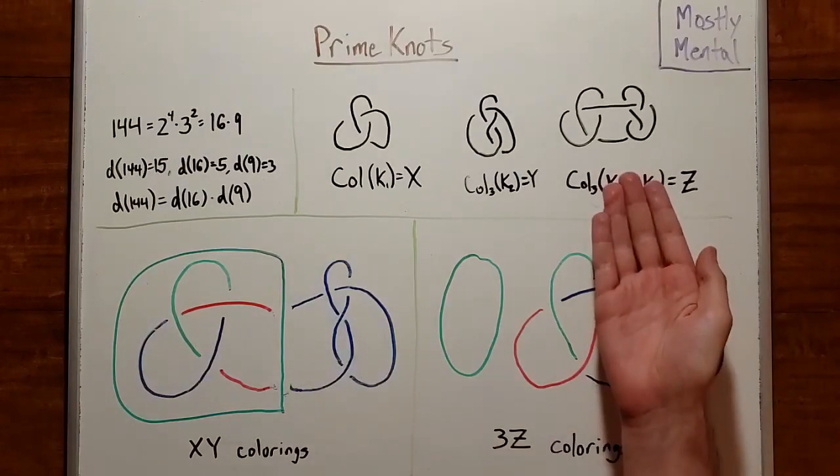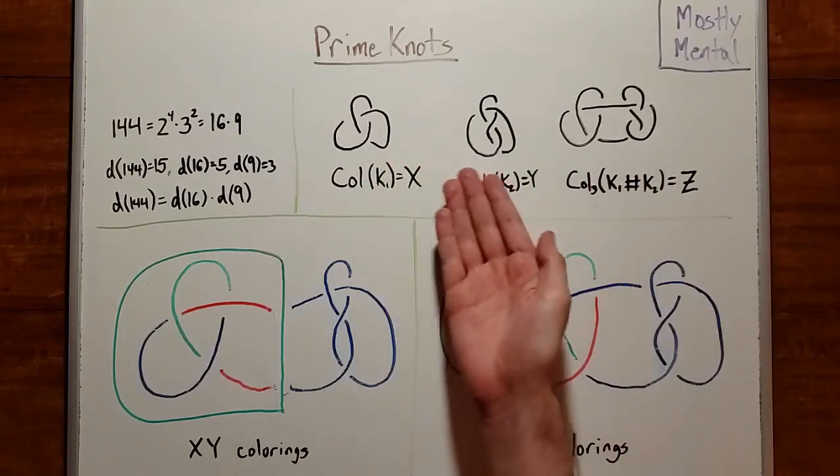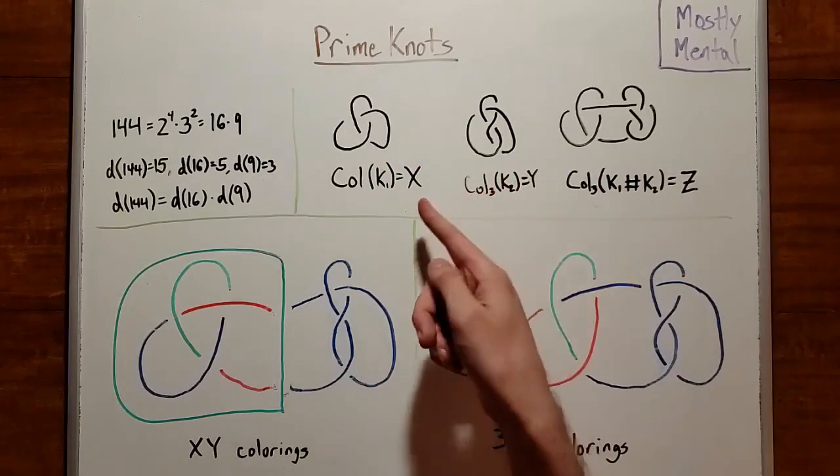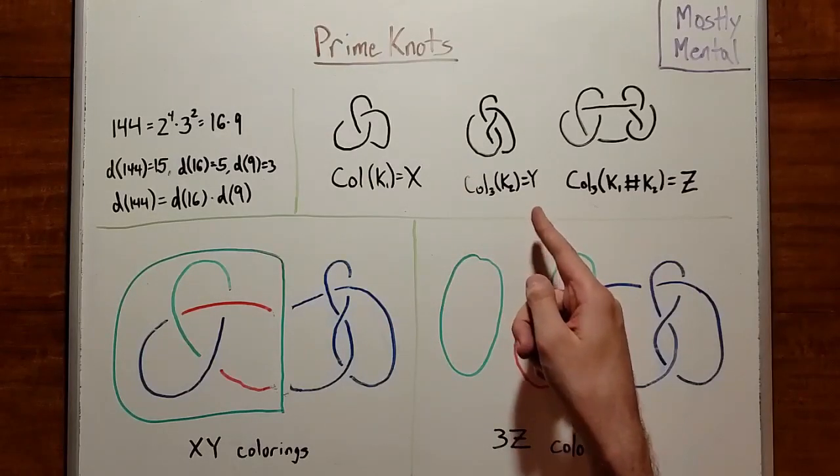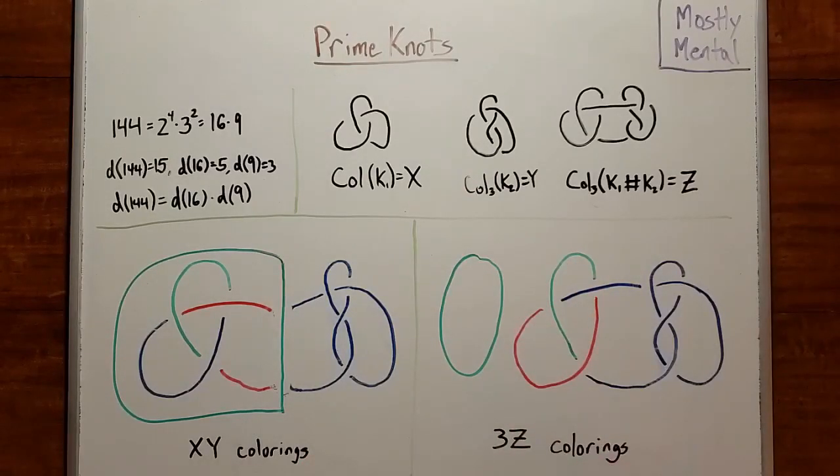So if we have a knot, we can count the colorings by breaking the knot down into its primes, counting the colorings for each of them, and then using this formula to combine the result. And we find similar behavior for a lot of knot invariants.